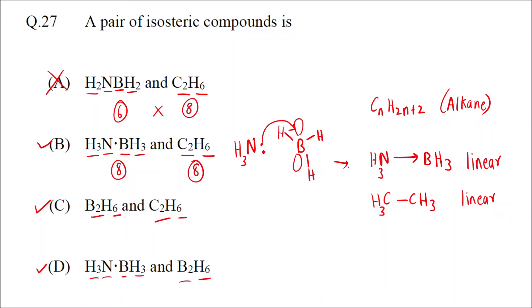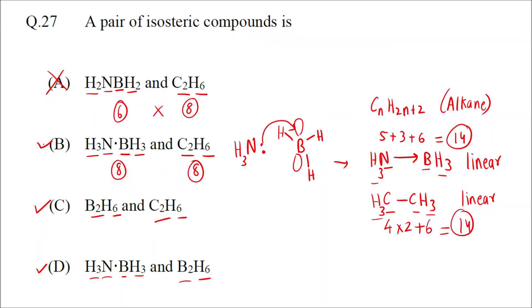What about the valence electrons? For NH₃·BH₃: nitrogen is 5, boron is 3, and there are 6 hydrogens giving 6 — so 5 plus 3 plus 6 equals 14. For C₂H₆: carbon valence electron is 4, so 4 into 2 is 8, plus 6 hydrogens gives 14. The valence electrons are also the same. So the correct answer is option B.